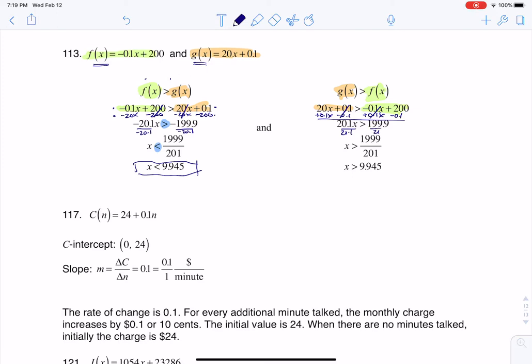Divide by 20.1. Move the decimal over if you want, or just plug it into your calculator. And here we go. When x is greater than 9.945, then g of x is greater than f of x.